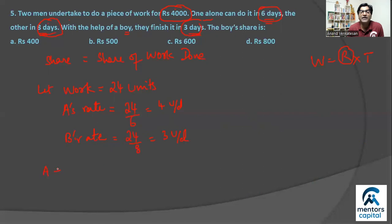And the combined rate of A plus B plus the boy C will be nothing but 24 divided by 3, that's equal to 8. So if we substitute A and B values here, 4 plus 3 is 7. Which means C will be 8 minus 7, or one unit every day. So we have the rates for all three.